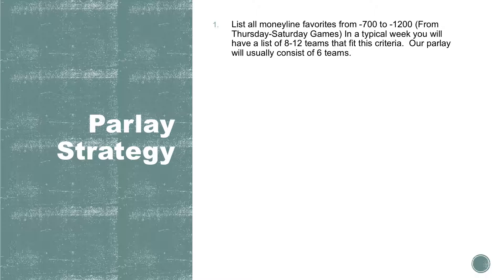What we're going to do is go through the checklist and explain it A to Z, then look at some real-life examples. First, we're going to list all the money line favorites from minus 700 to minus 1200 for the full week — so if there are games on Thursday or Friday, we would consider those games as well.